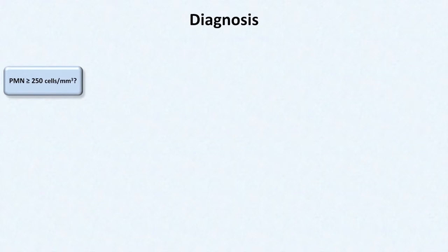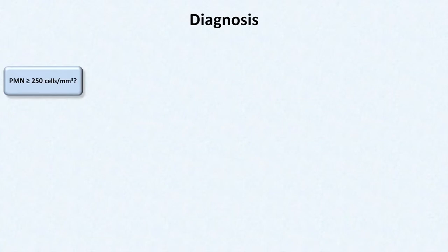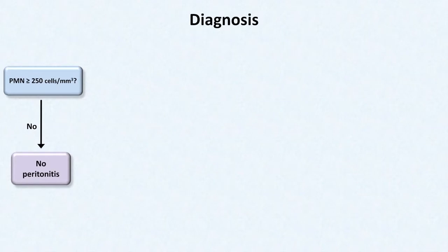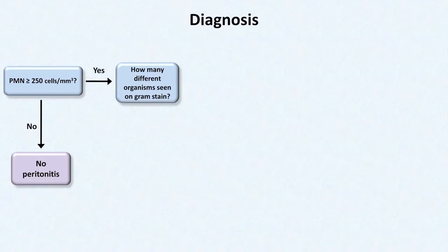So once we have those labs, how do they help our diagnosis? The first question to ask: does the fluid contain 250 or more polymorphonuclear cells per cubic millimeter? PMN is often used interchangeably with neutrophils, though technically it is a synonym for granulocyte — a category of white blood cells that also includes eosinophils and basophils. If there are fewer than 250 PMNs per cubic millimeter, the patient does not have peritonitis. The PMN count is now the de facto gold standard for the diagnosis of peritonitis.